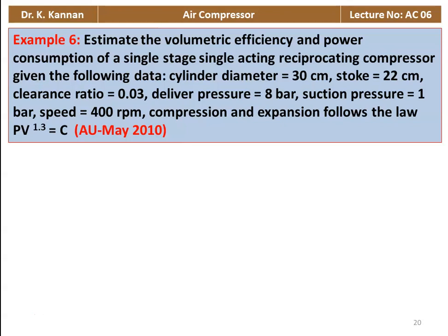Example number 6 from the May 2010 question paper. Estimate the volumetric efficiency and power consumption of a single-stage single-acting reciprocating compressor given the following data: cylinder diameter 30 cm, stroke 22 cm, clearance ratio 0.03, delivery pressure 8 bar, suction pressure 1 bar, speed 400 rpm, compression and expansion follows the law PV to the power 1.3 equal to constant.